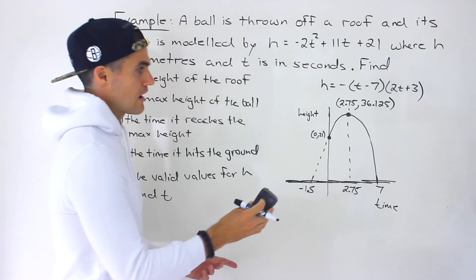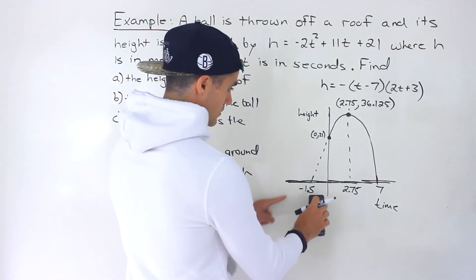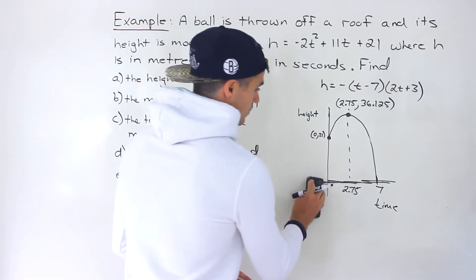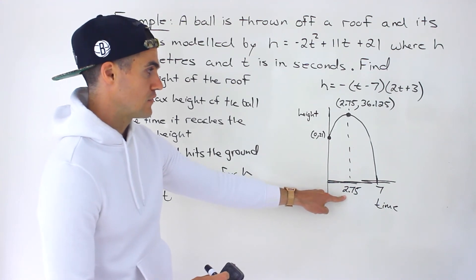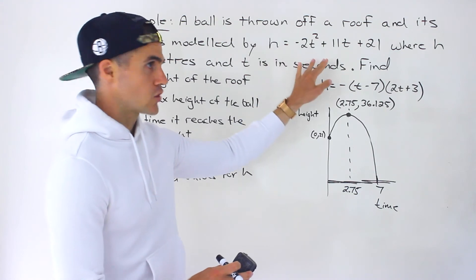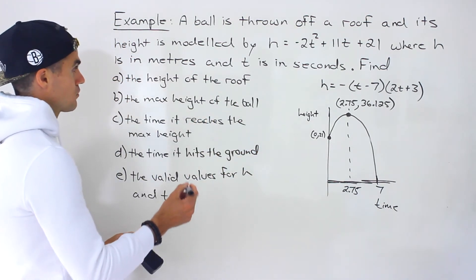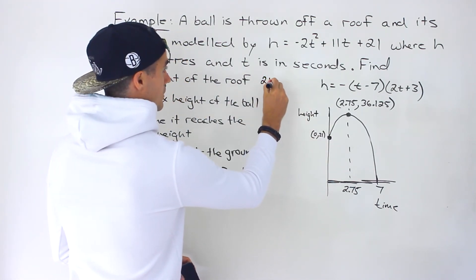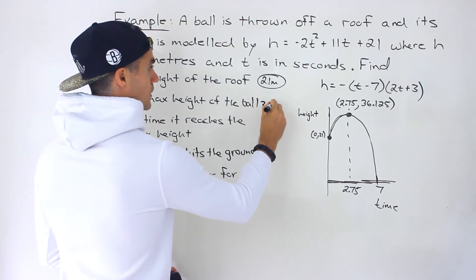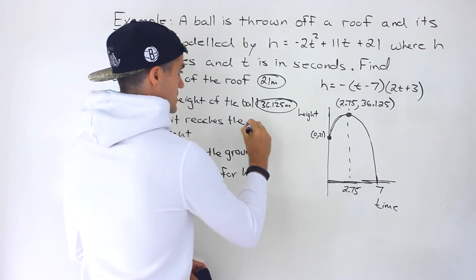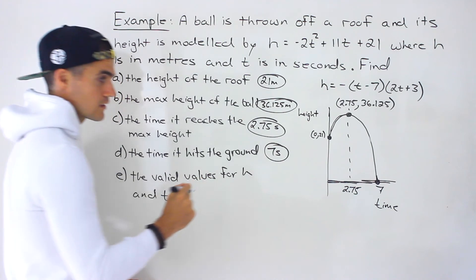Now we have enough information to answer all the questions. The height of the roof is 21 meters — that's where the ball was thrown from. The maximum height of the ball is 36.125 meters. The time it reaches that max height is 2.75 seconds. When does it hit the ground? That happens at the positive t-intercept, which is 7 seconds. We also want to note that the negative time portion of the graph is not relevant to this word problem.